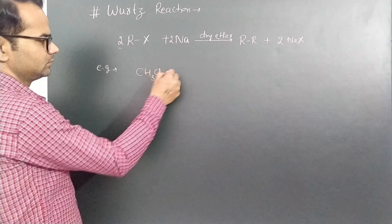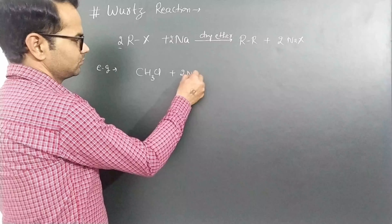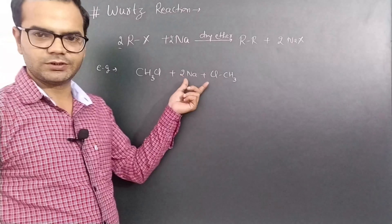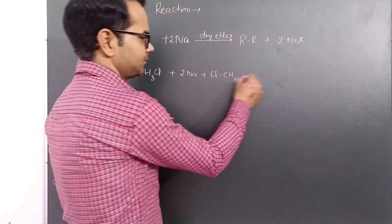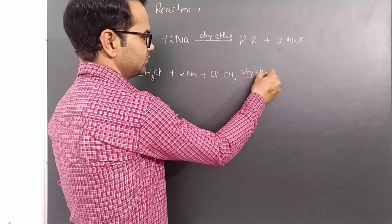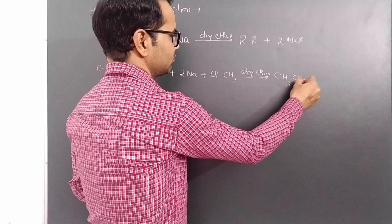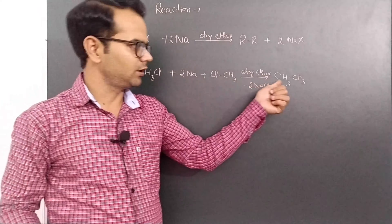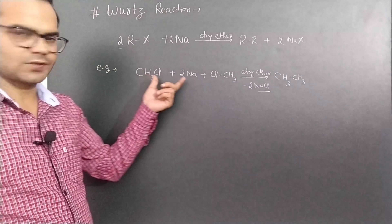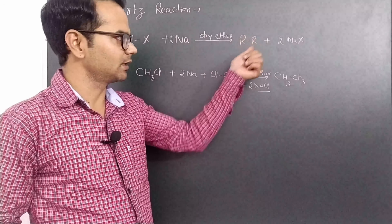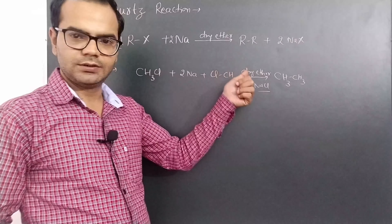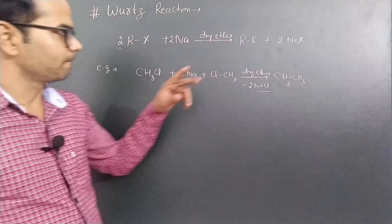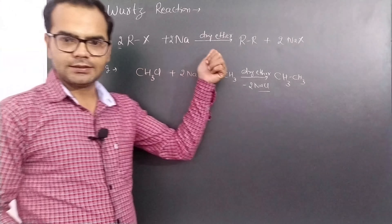For example, we have methyl chloride. Here we have two molecules of methyl chloride and two sodiums. In the presence of dry ether, ethane is formed. So it is a doubling reaction — two alkyl groups combine together to form an alkane. Even-numbered alkanes are formed: ethane, butane, hexane, octane, and so on.